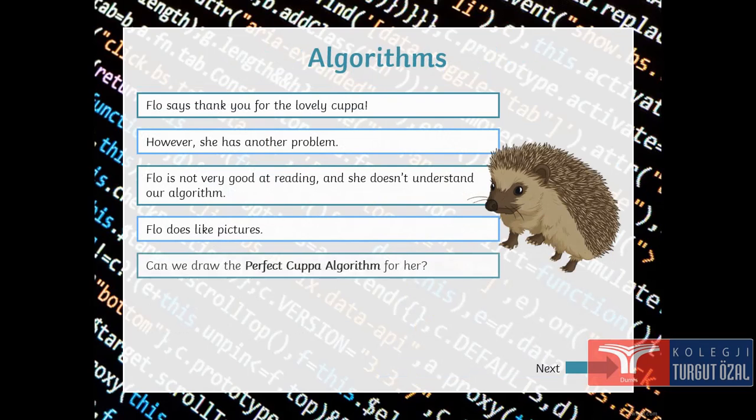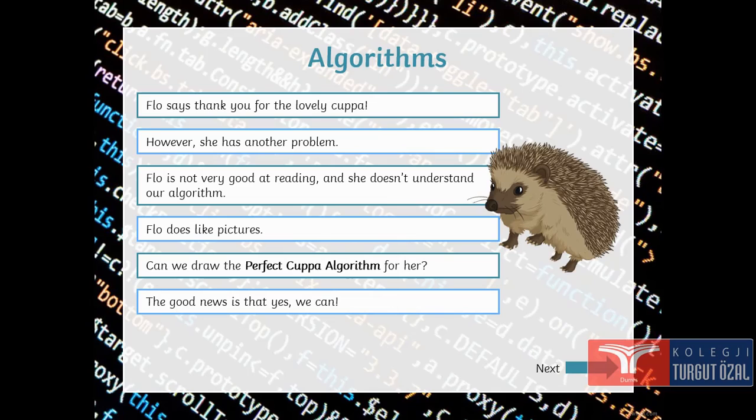Flow says thank you for the lovely cuppa. However, she has another problem. Flow isn't very good at reading and she doesn't understand our algorithm. Flow does like pictures. Can we draw the perfect cup algorithm for her?